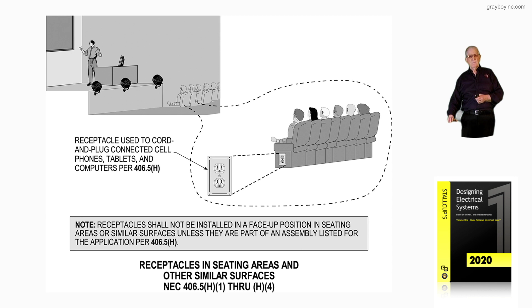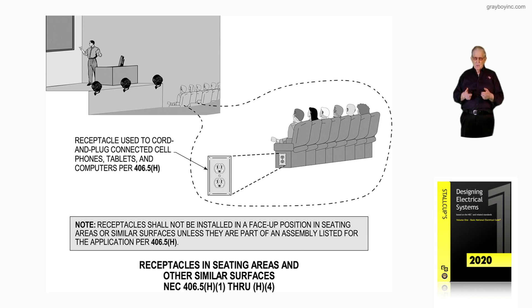They could push it down and it would disappear, push it and it'd pop back up. So either the receptacle is shown on the side where it could just be a regular receptacle, or you would use an assembly listed for such purpose. That's what figure 10-48 is illustrating, using the sections in the code to back up the figure with the illustration.